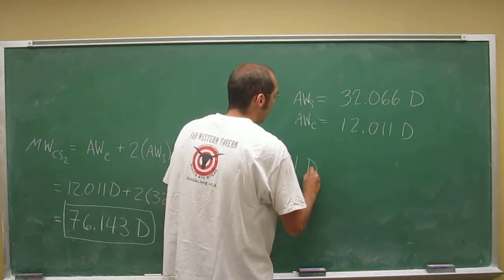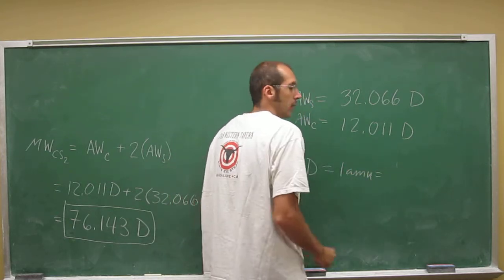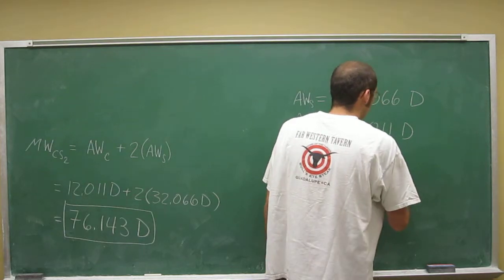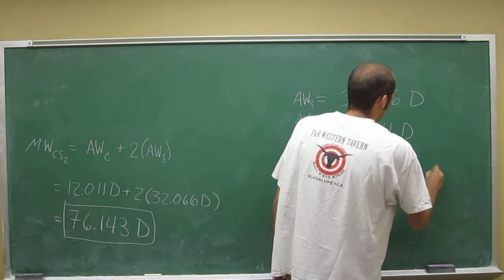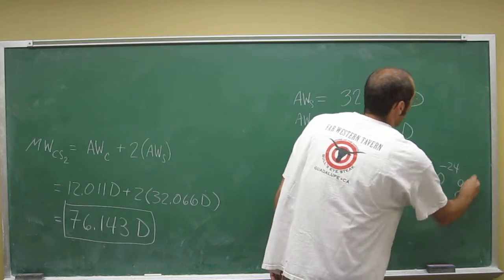So one Dalton, or one AMU, atomic mass unit, equals 1.661 times 10 to the negative 24th grams.